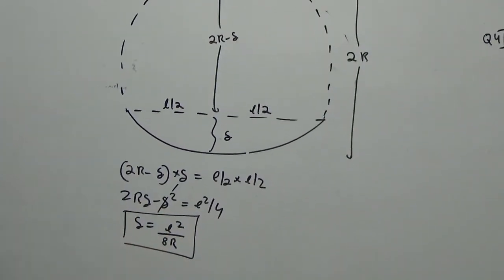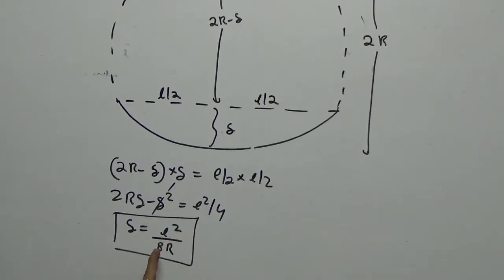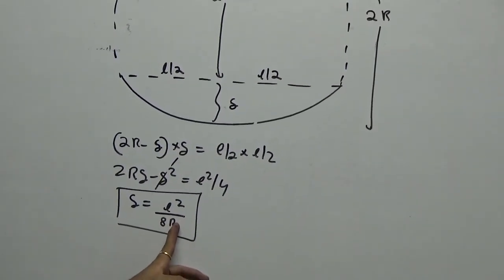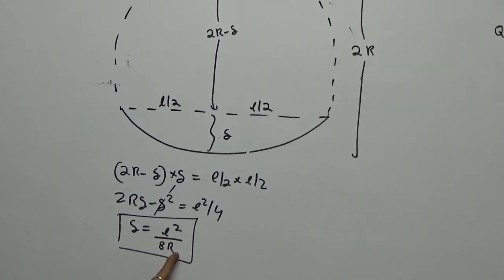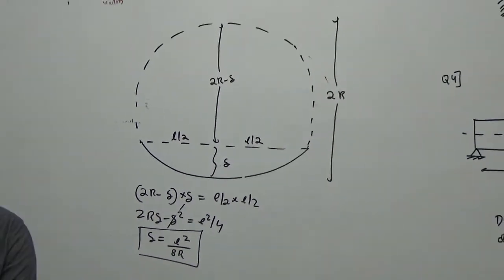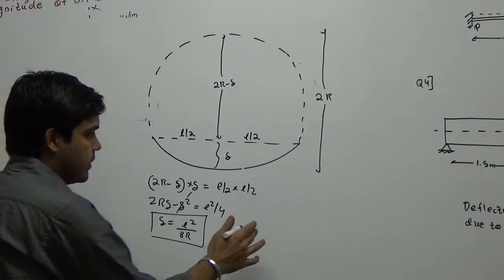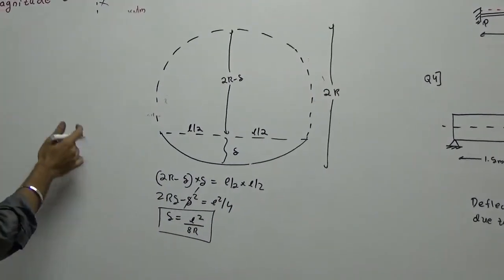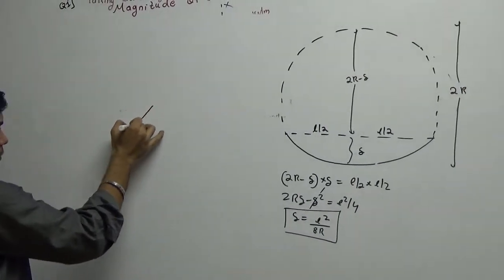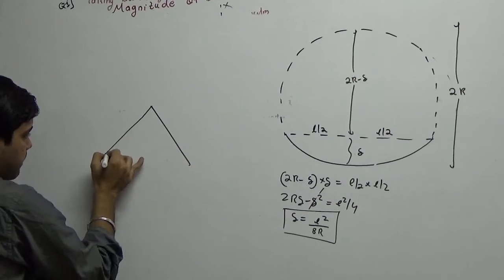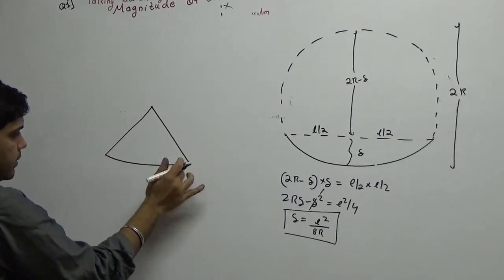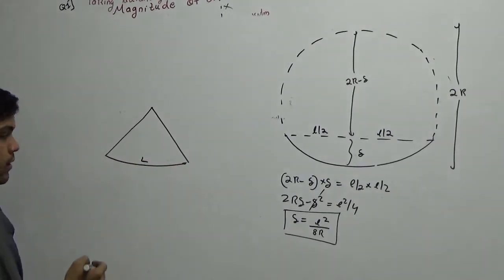Now, is L given? Yes. 8 is known. But is R given? No, R is not known. So again, to know R, you have to apply another concept. To estimate R, I can say I'll use this portion now. I have my circle like this. I'm saying this total length is right now L. Due to temperature, it started increasing.